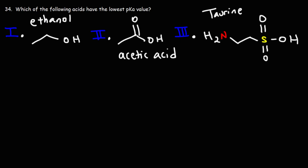Ethanol has a pKa of around 15.9, so for the most part it's neutral. Acetic acid is around 4.75, so it's a weak acid. Acetic acid is more acidic than ethanol. The reason is due to the resonance stabilization of the conjugate base. The stronger acid has the more stable or weaker conjugate base; the weaker acid has a stronger conjugate base.